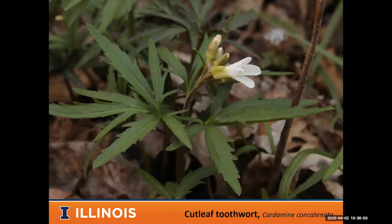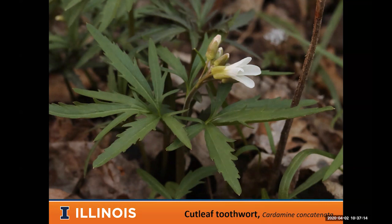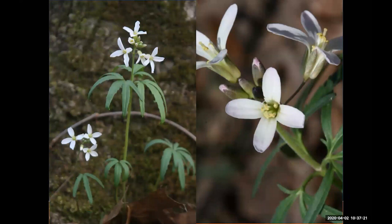Another early spring flower is toothwort — one of our mustards with four petals. This is cut-leaf toothwort with very serrated leaves. It has a broader habitat availability than many others, growing in uplands as well. It'll get little seed pods called siliques later in the year. Those cut, serrated leaves are really diagnostic for this one — just a gorgeous, delicate wildflower.